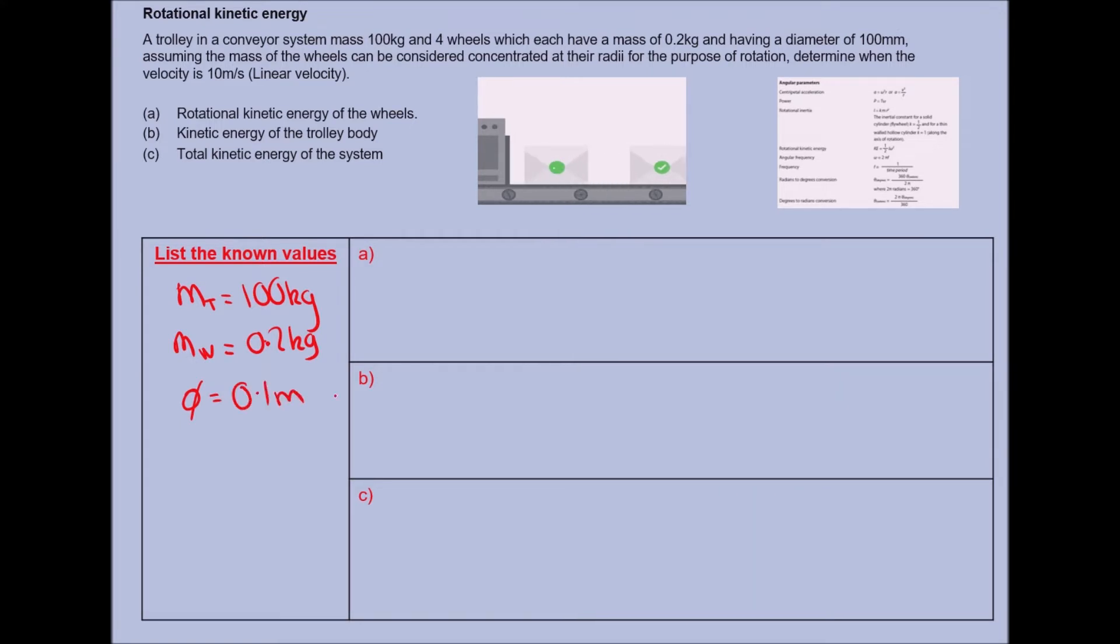These wheels that rotate have a diameter of 100 millimeters, which as we know is 0.1 meters, 100 divided by a thousand. We've got a bit of information here about the radius, but we've actually got a linear velocity here. Linear velocity is equal to 10 meters per second.